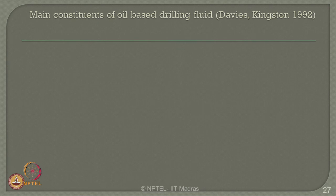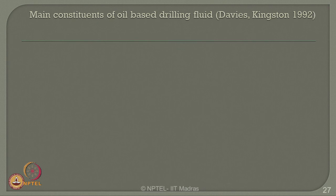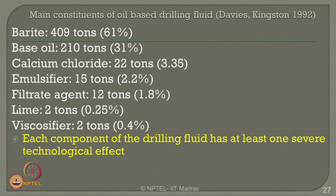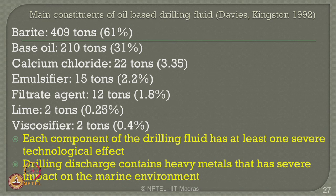Looking at the main constituents in oil-based drilling fluid as indicated by Davis and Kingston in 1992, barite is about 61 percent, base oil about 31 percent, with the remaining amounts being calcium chloride, various emulsifiers, filtrate agents, lime and viscosifiers. The main constituents — base oil and barite — account for about 92 percent. Each component of the drilling fluid has at least one severe technological consequence in the marine environment, and drilling discharge containing heavy metals has serious and severe impact on the marine environment.